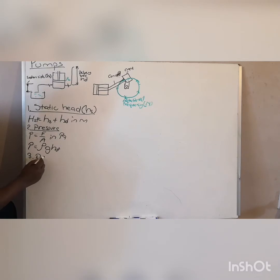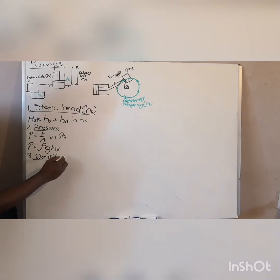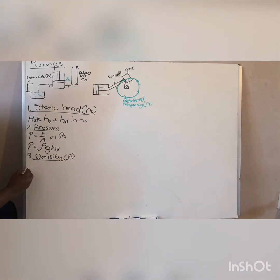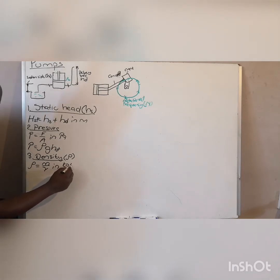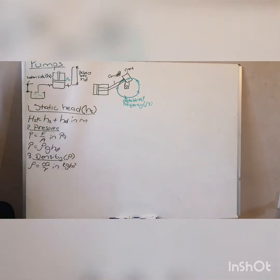The third formula is density. The symbol for density is rho. Density equals mass over volume, in kg per metre cube. Always remember this formula for density.